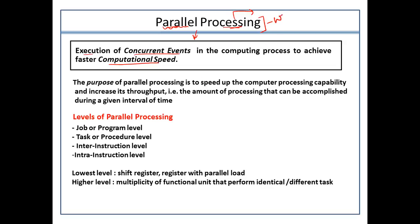Now the point is: why do we need parallel processing? The answer is also very obvious — because we want to speed up the computer's processing capability. We rely on modern machines because their execution rate and throughput rate is very high. The basic purpose of parallel processing is to speed up the computer's capability of processing data and to increase its throughput — that is, the amount of processing that can be accomplished during a given interval of time.